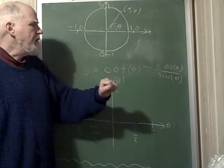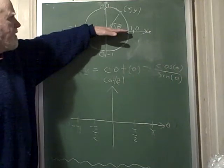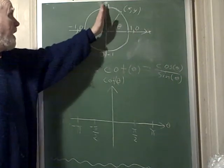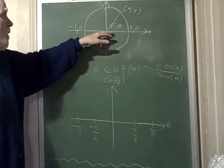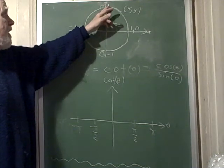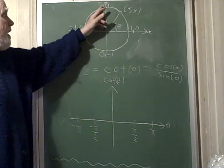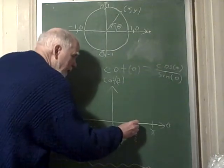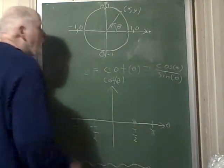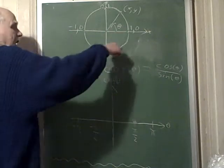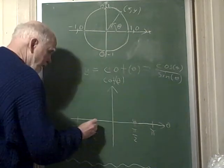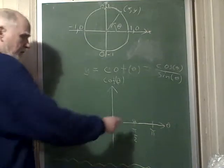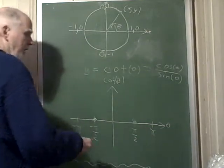Wherever the cosine is zero, the sine is going to be one or negative one, so we're going to have a zero point. At 90 degrees — or pi over 2 — the cosine is zero, so the cotangent is zero there. Also at negative pi over 2 the cosine is zero.